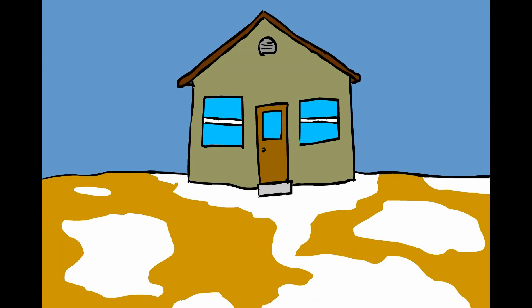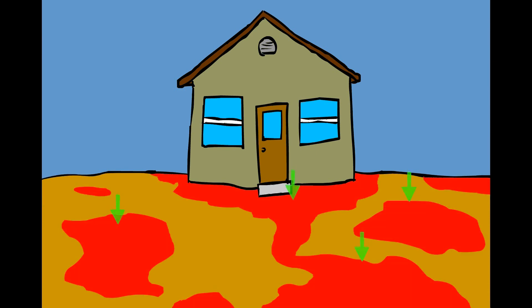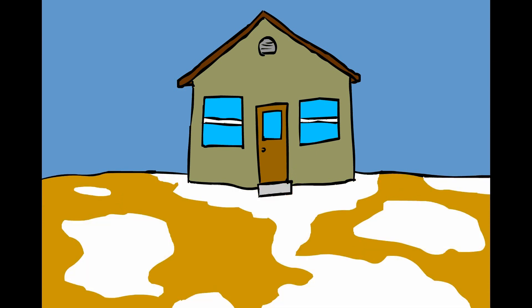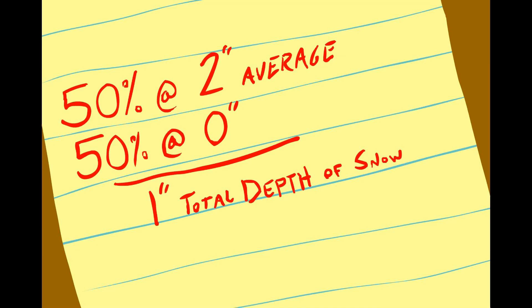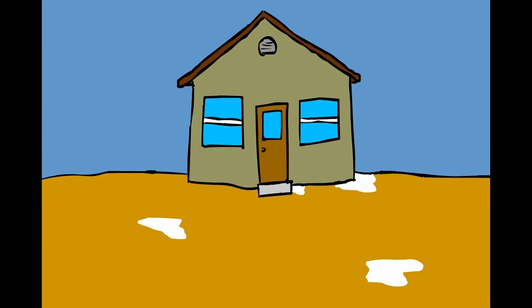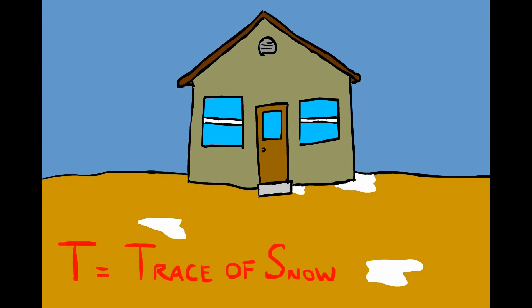For example, let's say half of the ground is bare and the other half, after taking multiple measurements, averages out to two inches. Your total depth measurement would average out to one inch. If more than half of the ground is bare, report T for trace of snow.